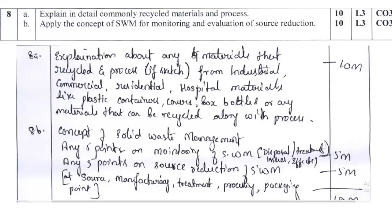There are different types of processes that you need to explain with the help of a block diagram. For example, if you want to recycle paper, what are the major processes involved? That is exactly what this question implies. The weightage is 10 marks — at least 5 points, with 5 times 2 equal to 10 marks.